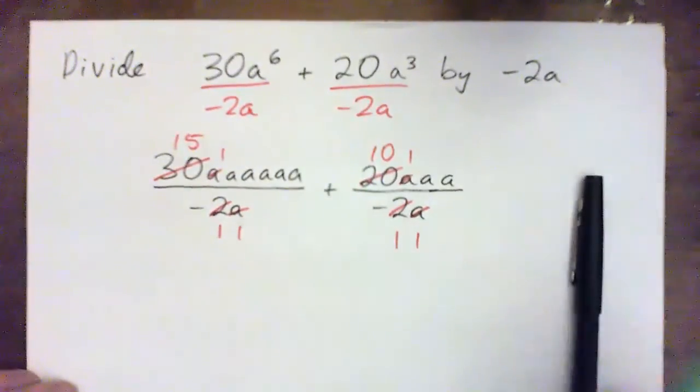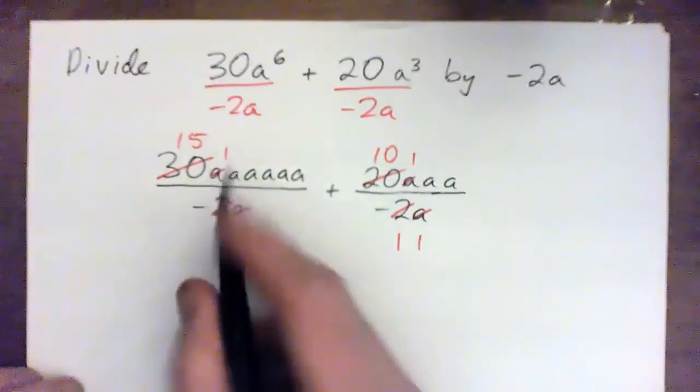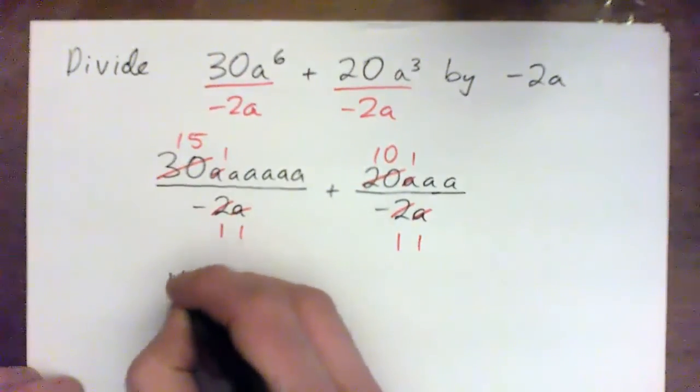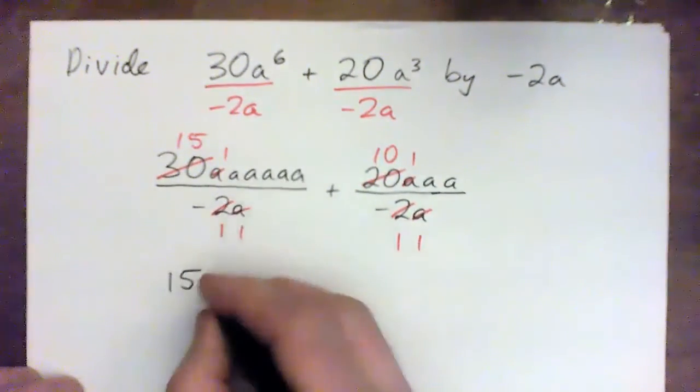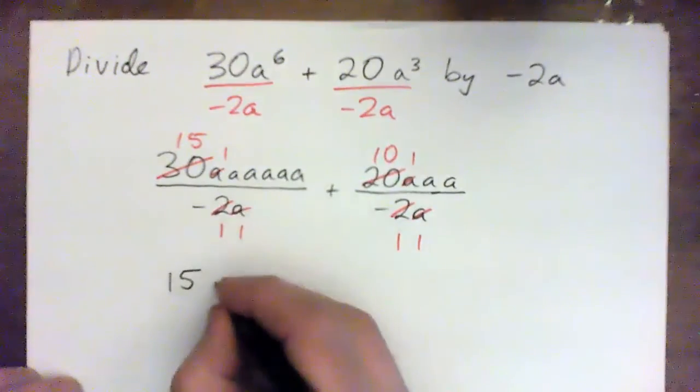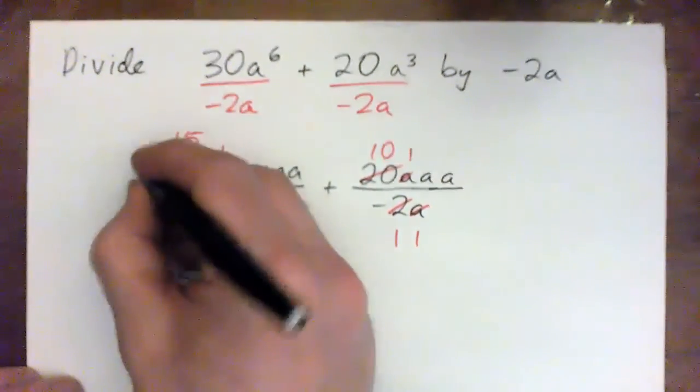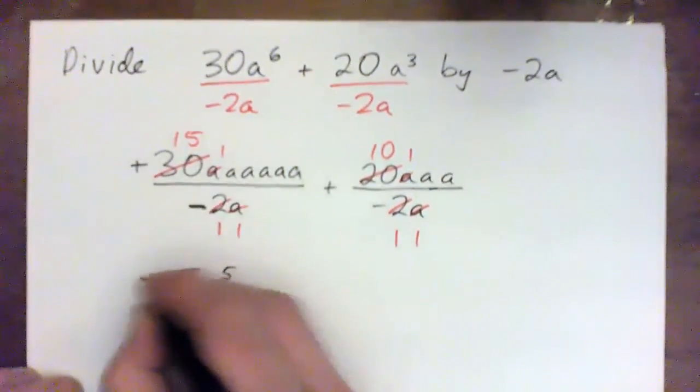And so we have, and watch out, this is a positive 15. And then I've got 1, 2, 3, 4, 5, 5 A's. So that's A to the power of 5. But this is a positive over a negative, which makes that negative.